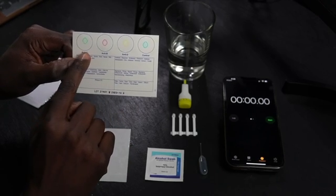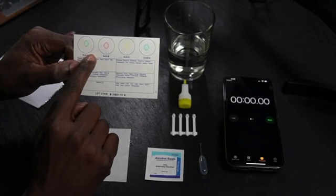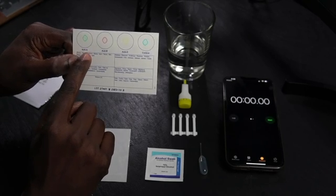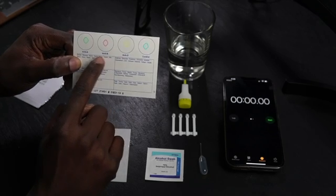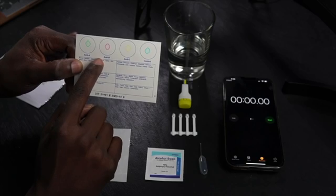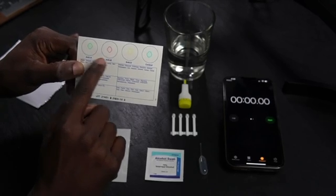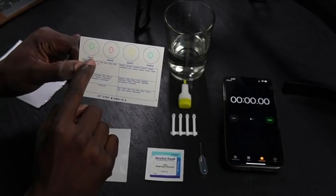So if you have agglutination in the anti-A circle, that person has type A blood. If you see agglutination in the anti-B circle, you know it's type B. If you see it in both of these, you know it's type AB. And if you don't see it in either of these, you know that it's type O. Once again, for a more in-depth explanation, check out my last video.